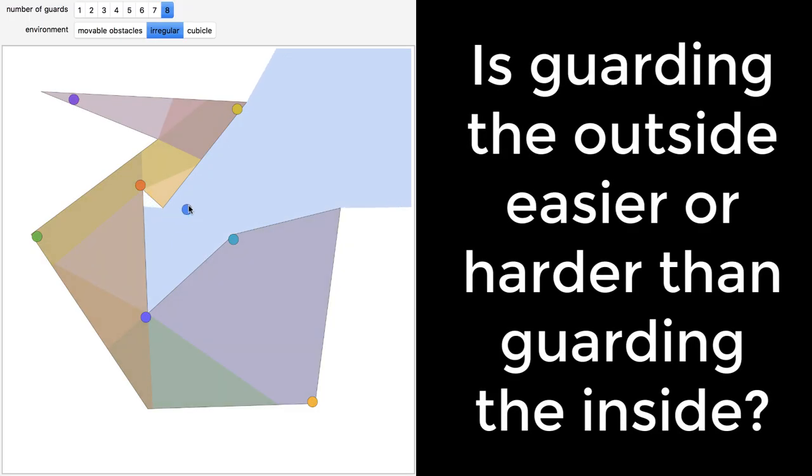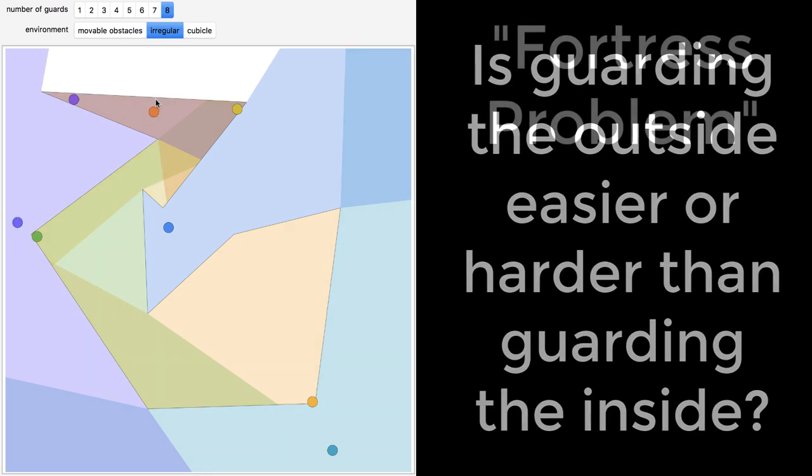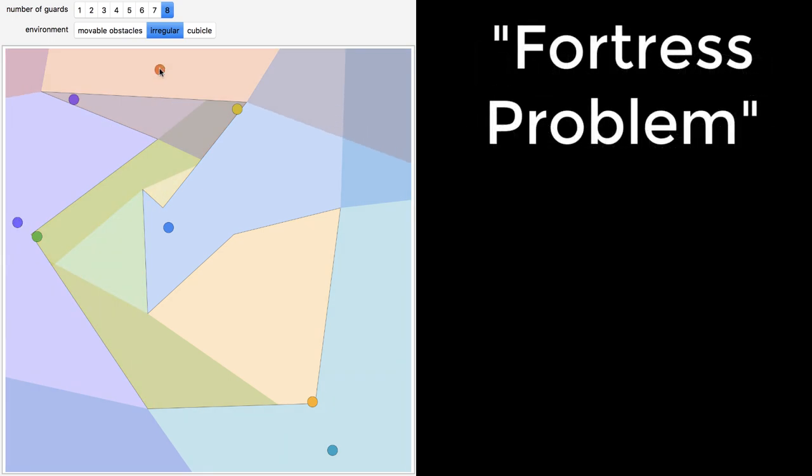Smart subscribers will notice that I wanted the minimum number of cameras to protect the outside of my house, not the inside. The minimum number of guards to cover the exterior of an arbitrary polygon is called the fortress problem.